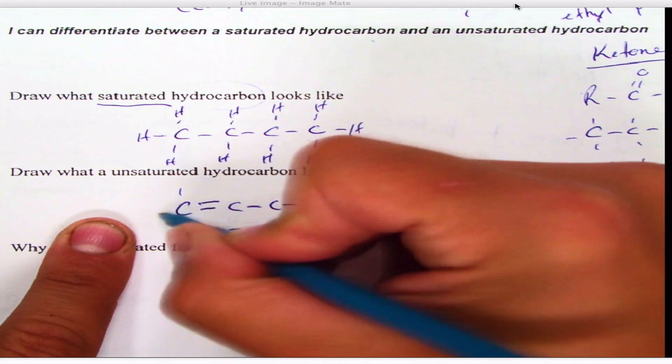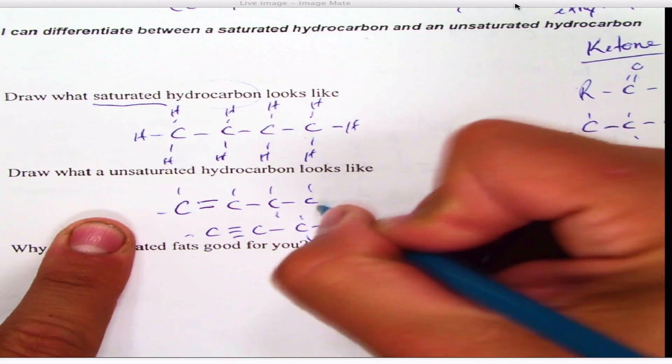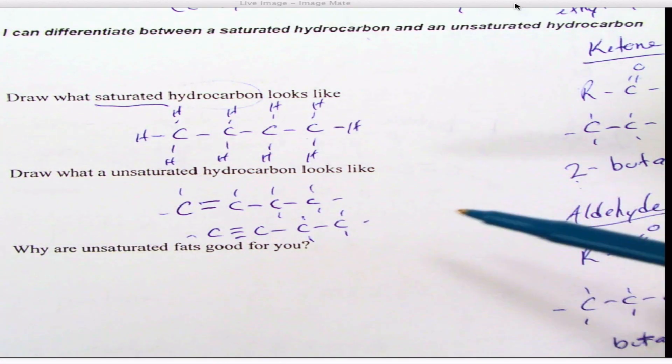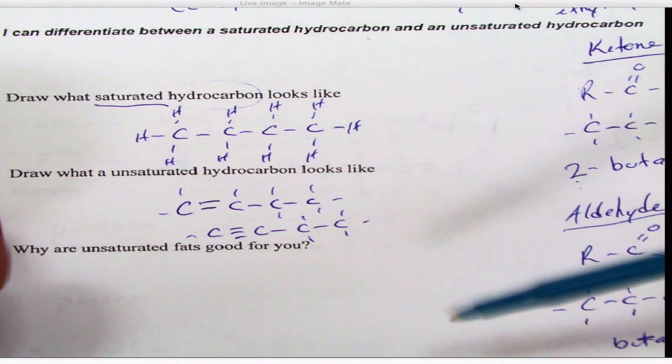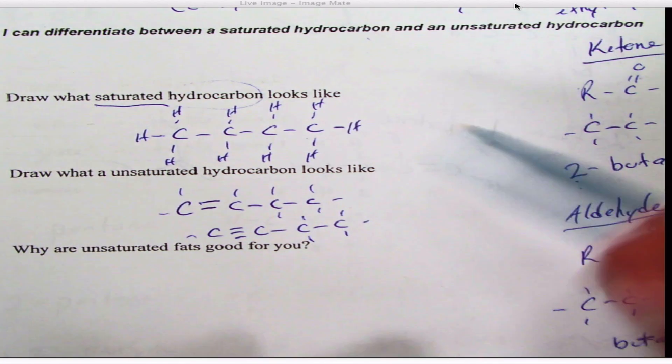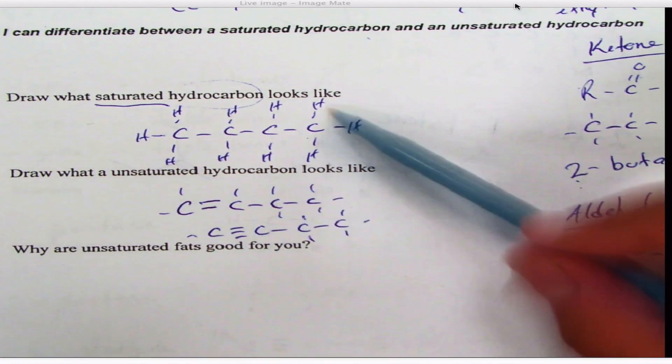These molecules don't have the maximum amount. You can actually fit them—you can actually plunk hydrogens on there, which is called hydrogenation, which is not very good. So we have saturated and unsaturated hydrocarbons. This relates into fats.